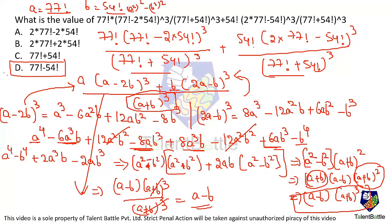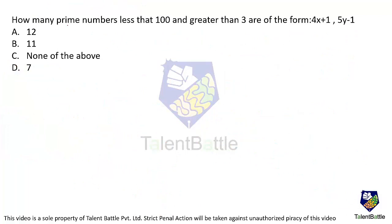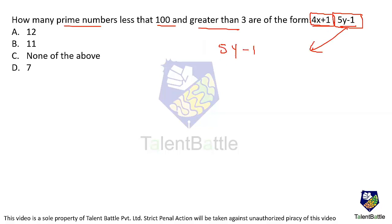Next question: how many prime numbers less than 100 and greater than 3 are in the form of 4x + 1 AND 5y − 1? Let's first analyze the condition 5y − 1. When you multiply any integer by 5, the result ends in 0 or 5. Subtracting 1 gives a last digit of either 9 or 4.